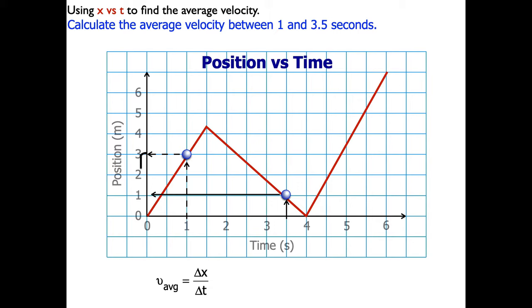So the displacement is the difference between these two positions. And remember, displacement is always final minus initial. Final is the one that occurs later in time, so the final position, and there's the initial position that occurs earlier in time. So the displacement is the final minus the initial. So it's going to be 1 minus 3, or negative 2 meters for the displacement.